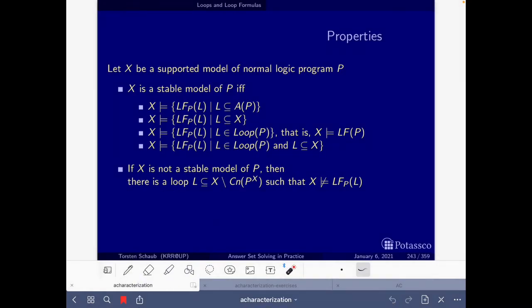As I said before, in the exercise first we are going to find the supported models or the models of the completion, and then once we have those, if X is a supported model, then X is a stable model if and only if X satisfies the loop formula. So what we are going to do is first find the supported models, and then to check which of those are stable, we just have to see which of them satisfies the loop formula that we will have done in a previous part of the exercise.